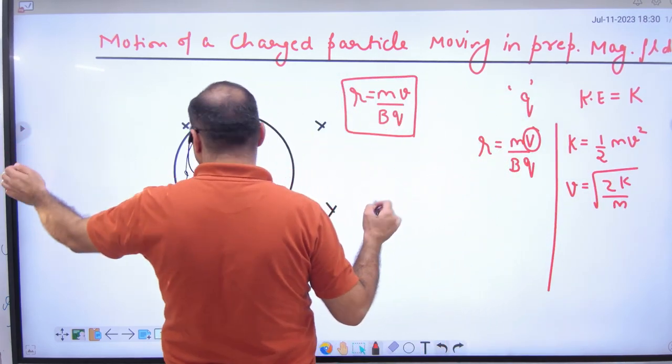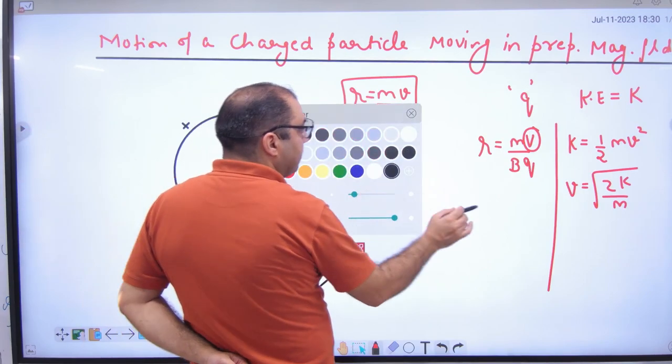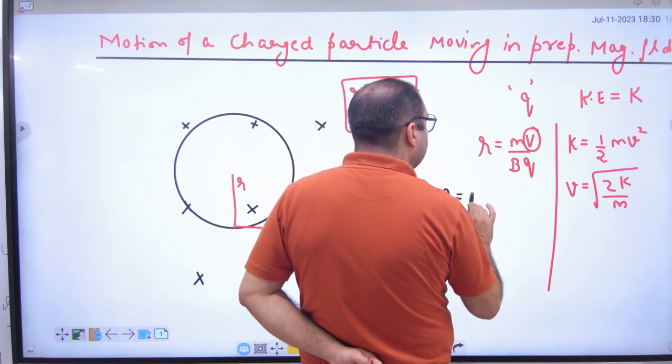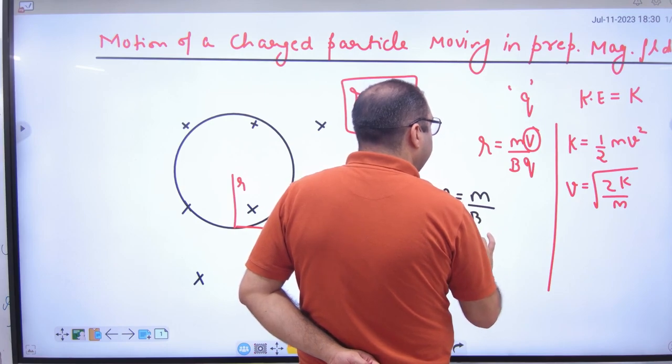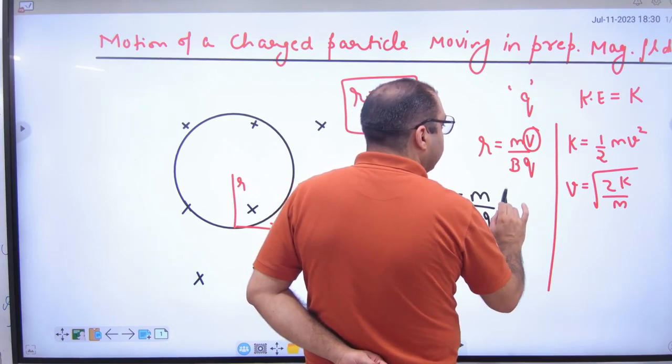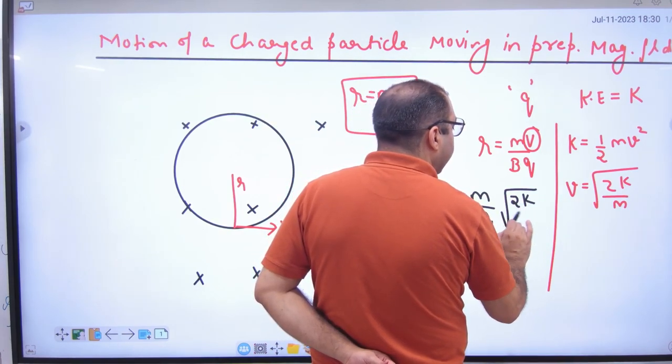You will put this velocity here. Then what value will you get? R is equal to m by bq, and in place of velocity, square root of 2K by m.